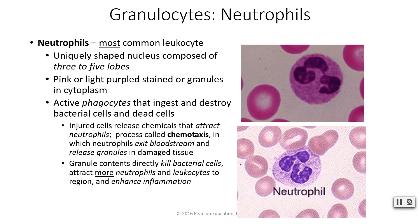Neutrophils are the most common leukocyte — not just the most common granulocyte, but the most common leukocyte period. The cell is accompanied by a multi-lobed nucleus; you've got somewhere between three and five lobes of the nucleus in a neutrophil. These tend to stain a pinkish or purplish shade. If you look closely, all those little tiny dots are the granules we've mentioned.